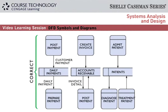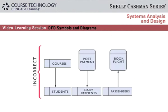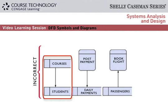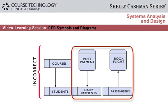There are rules for data stores, too. Normally, a data store must have at least one input flow and at least one output flow. Here are three correct examples. But these are incorrect. In the first example, a data store must connect to a process. It cannot connect directly to another data store or to an entity. The next two examples are incorrect because a data store must have input and output, unless the data is fixed, like a tax table.